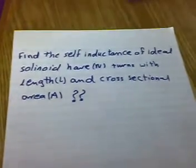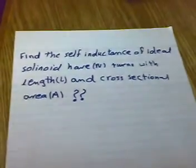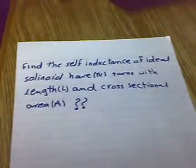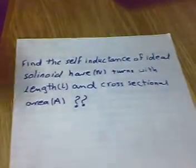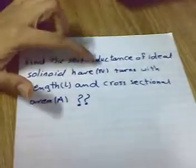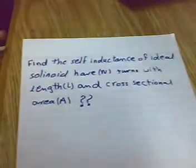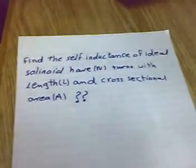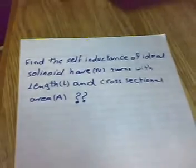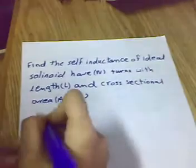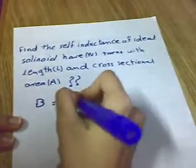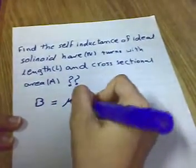Today we will discuss self inductance. We'll find the self inductance from the number of turns N, length L, and cross-sectional area A of a solenoid. First, we get the magnetic field B equals μ₀ times N over L...